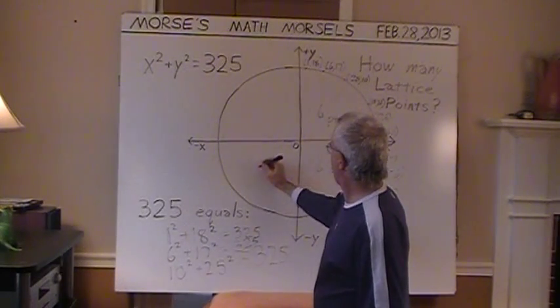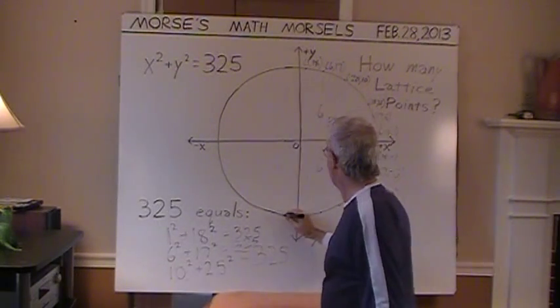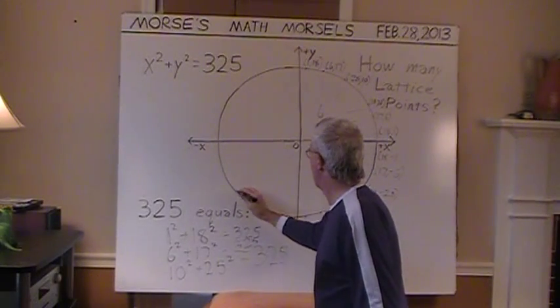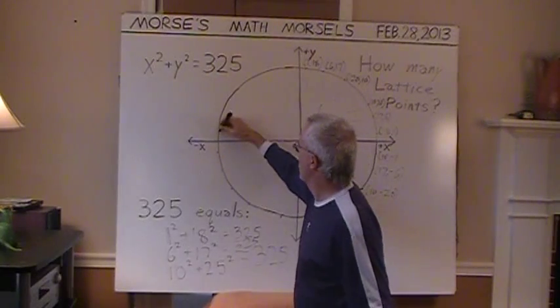And then they, in turn, could be reflected across this y-axis, this vertical line. Well, guess what? We'll have yet 6 more lattice points. Just drawing the dots quickly.